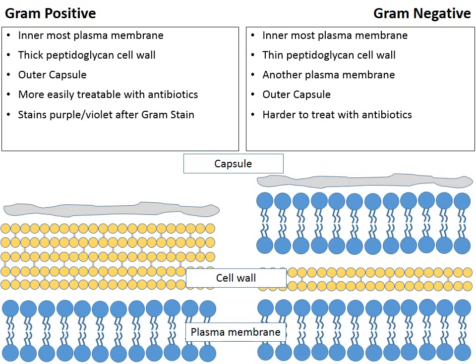Eventually we're going to talk about a gram stain. Gram-positive bacteria underneath the microscope appear a violet-purple color after performing a gram stain. Gram-negative bacteria, after performing a gram stain, appear a reddish to pinkish color underneath the microscope. We're going to explain why this is in just a few moments.